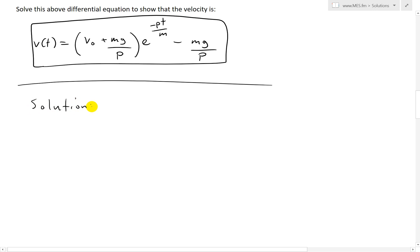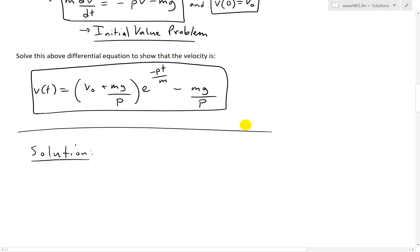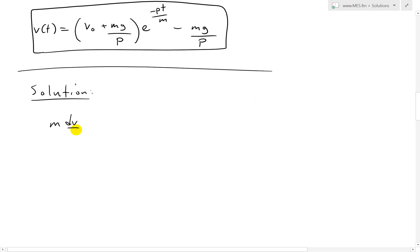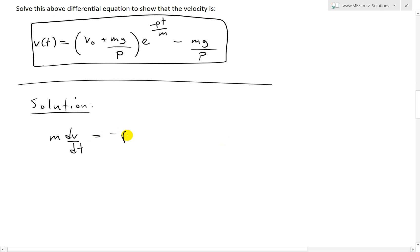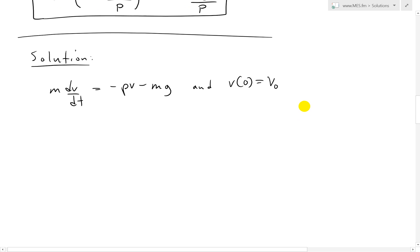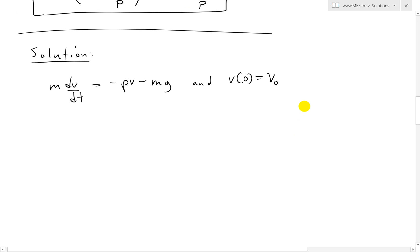So let's solve that. Our initial value problem has the differential equation m dv/dt equals negative pv minus mg, and initial condition v(0) equals v₀. First, notice it's a separable equation — we can divide and rearrange to get all the v's on one side and all the t's on the other side.